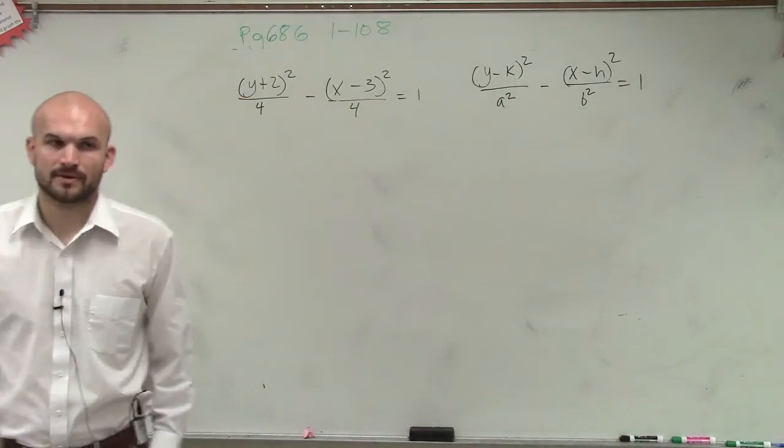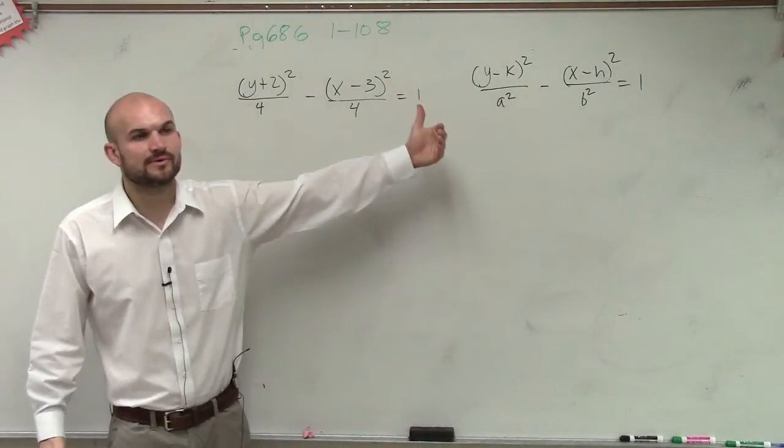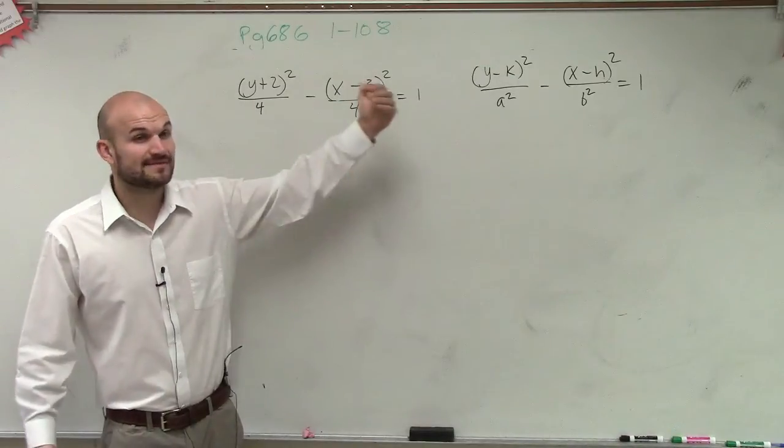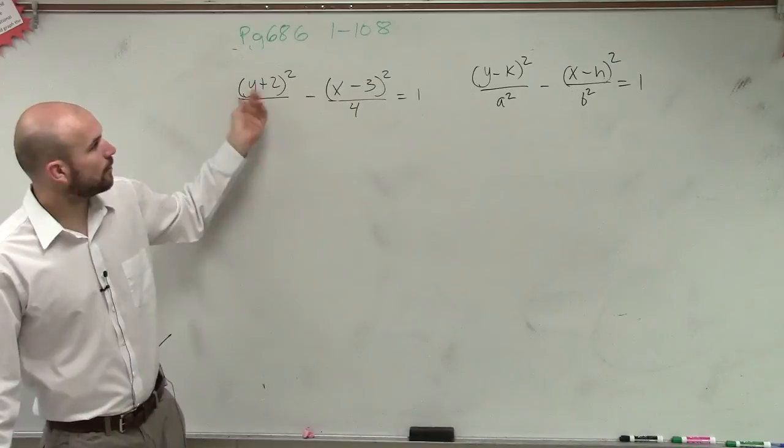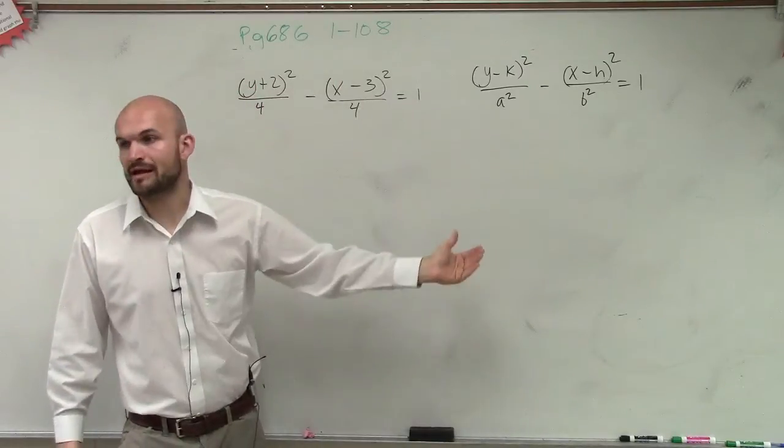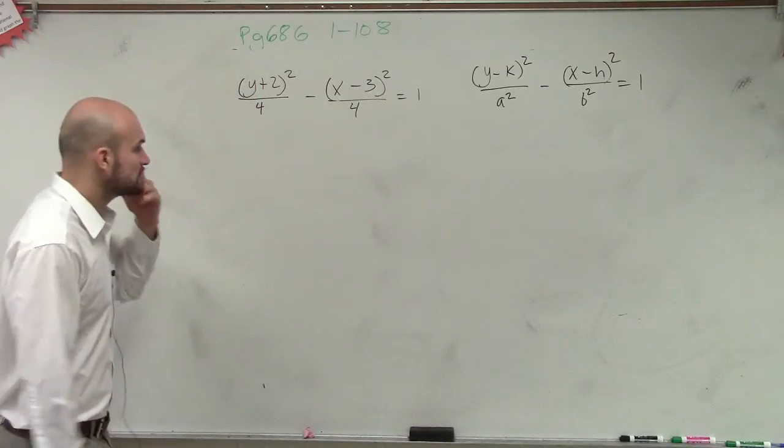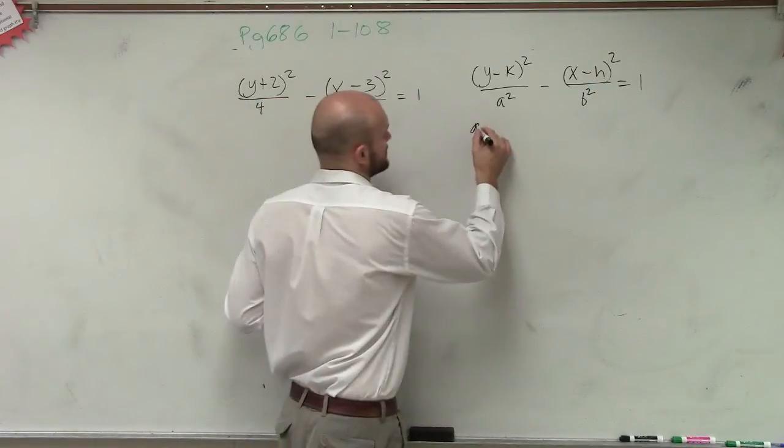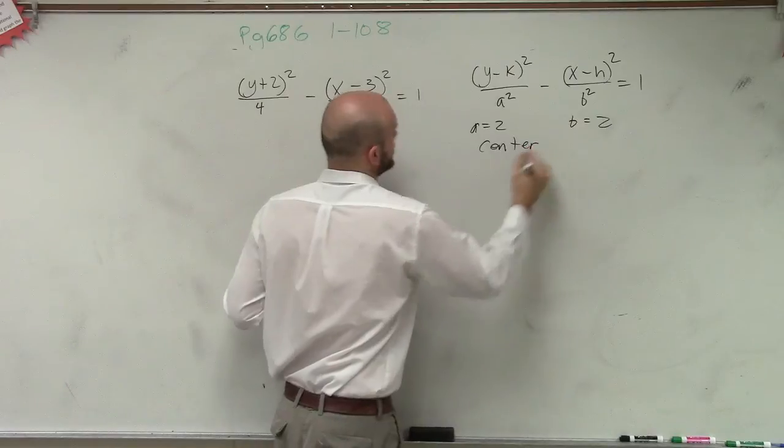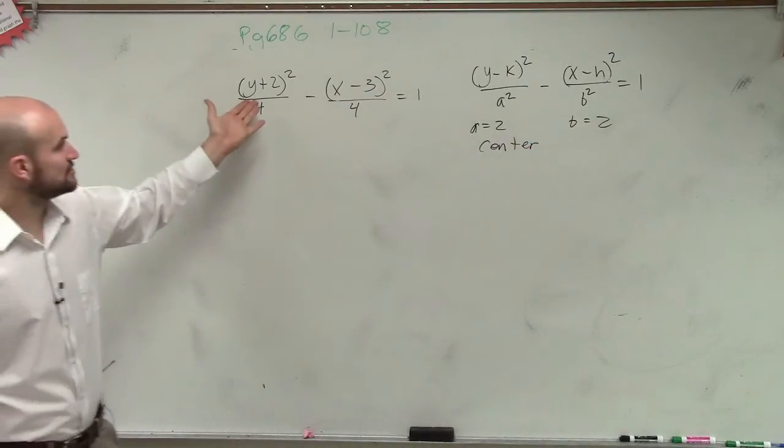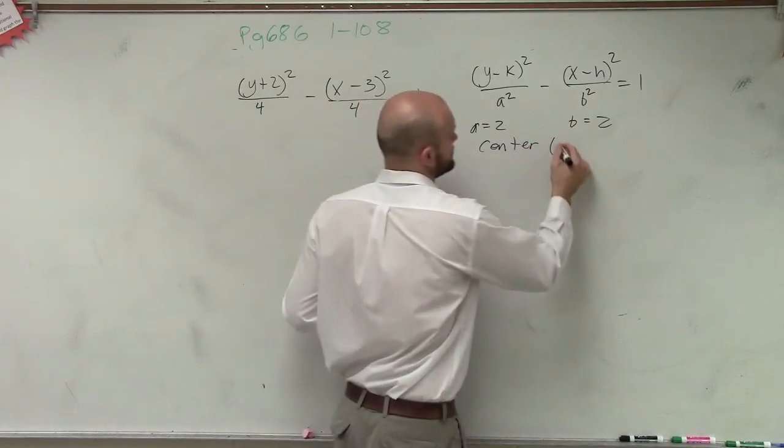Because remember, it's always a squared minus b squared for hyperbola. And then since we have our y over x, we know that it's going to be a vertical transverse axis. So we can determine our a is going to equal 2, our b is going to equal 2, and we can say the center of this graph is going to be at 3 comma negative 2.